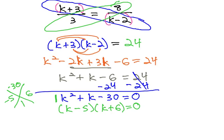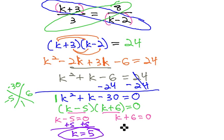Now that it's factored and equal to 0, we can say one of the factors must be 0. k minus 5 equals 0, or k plus 6 equals 0. And we can solve quickly by adding 5 to get k equals 5, or subtracting 6 to get k equals negative 6.